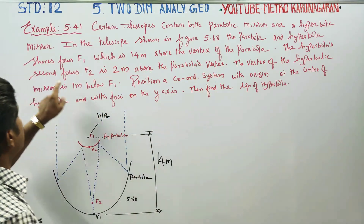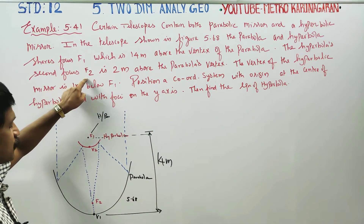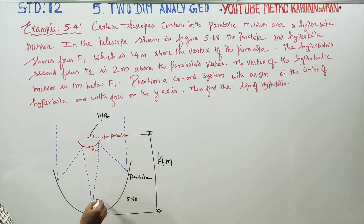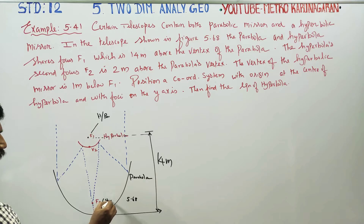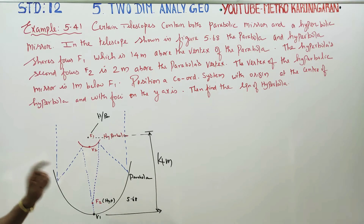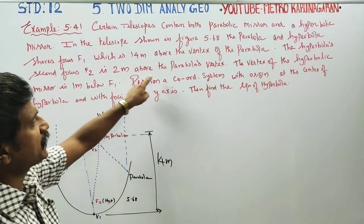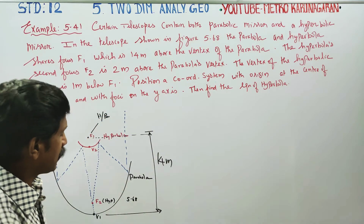The hyperbola's second focus is F2, shown in red color. F2 is the second focus of the hyperbola and is 2 meters above the parabola vertex.